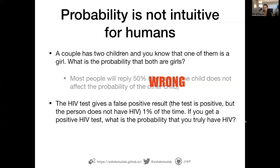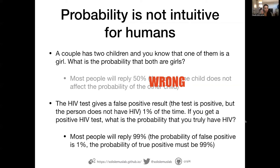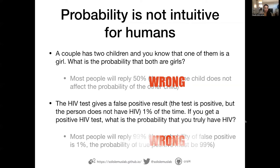Second example about how our gut is wrong: the HIV test gives a false positive result — meaning the test is positive but the person does not have HIV — one percent of the time. This is the false positive rate. If you get a positive result, what is the probability that you're truly infected with HIV? Most people reply it is 99% because there's a one percent chance of being falsely sick. This is also wrong.